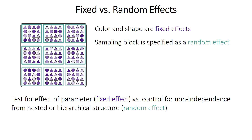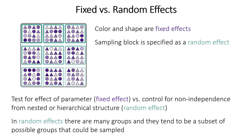If you're trying to control for non-independence created by a nested data structure where you don't really care about the factor itself but want to account for potential differences between groups, that would be a case where you might treat it as a random effect — this is probably the most common situation for mixed effects models. The fixed effects are the parameters you're typically interested in. A variable is often treated as a random effect if the categories are just a subset of all possible groups that could be sampled, or if there are a lot of groups. If there are only two groups and those are the only two possibilities, it's almost certainly going to be a fixed effect. But again, there aren't firm rules, and the decision depends on your question and your data.